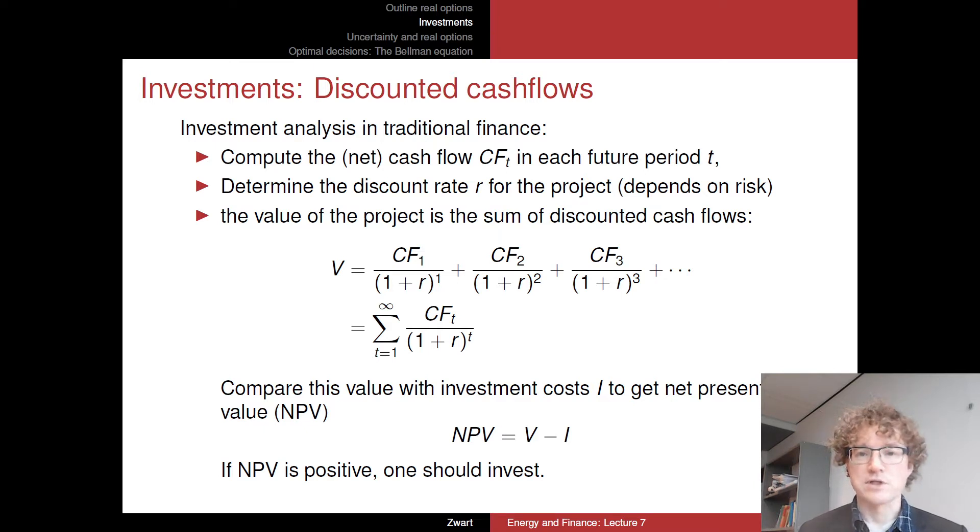And then the value of the project, of course, the present value is the sum of all those discounted cash flows. So the first cash flow will be discounted by 1 plus R to the power 1, and the cash flow which occurs in year 2 might then be discounted by 1 plus R to the power 2, etc., as far as you would like to go.